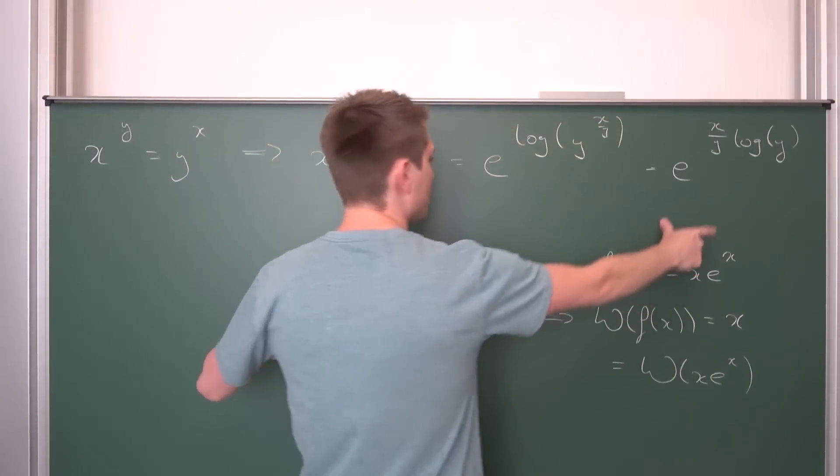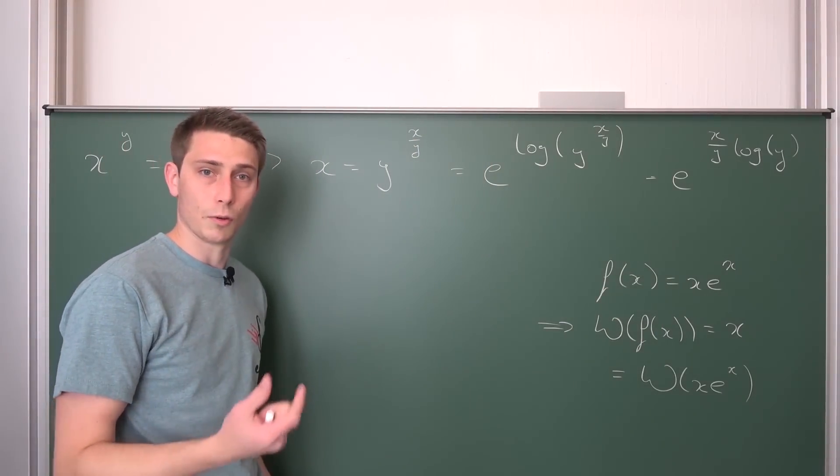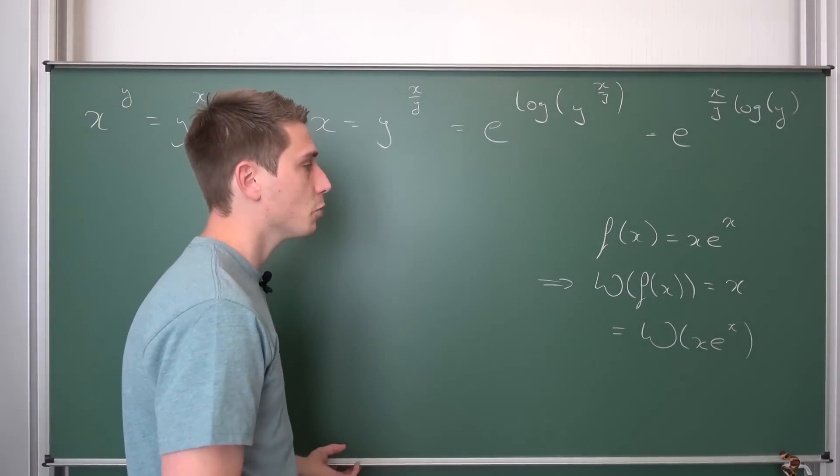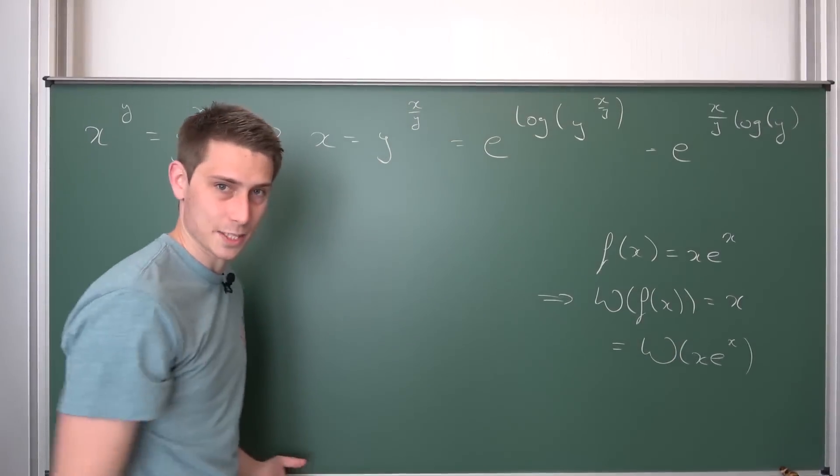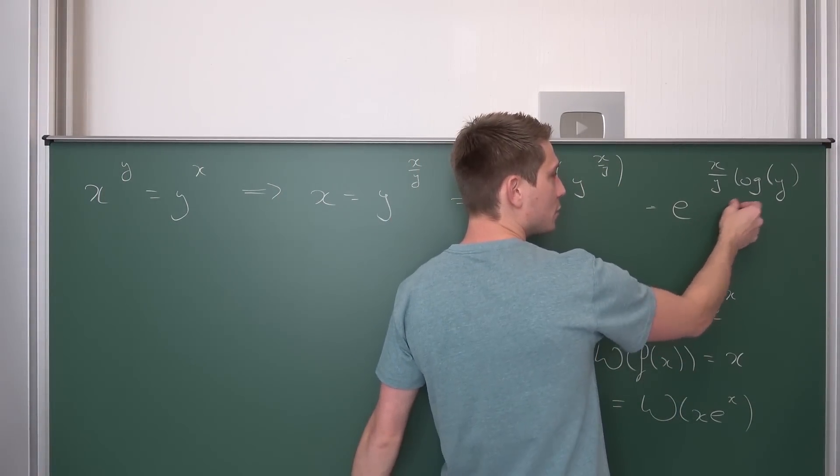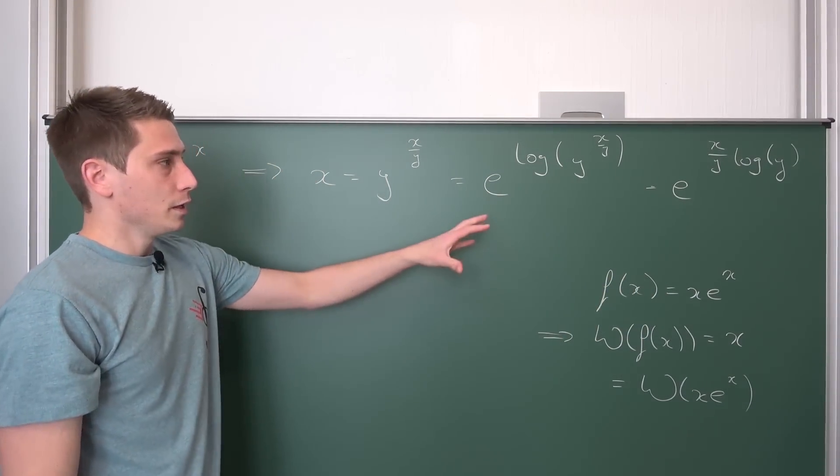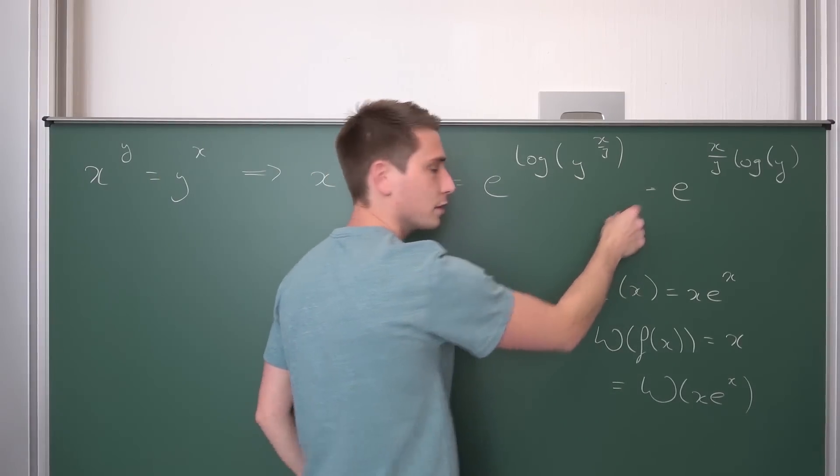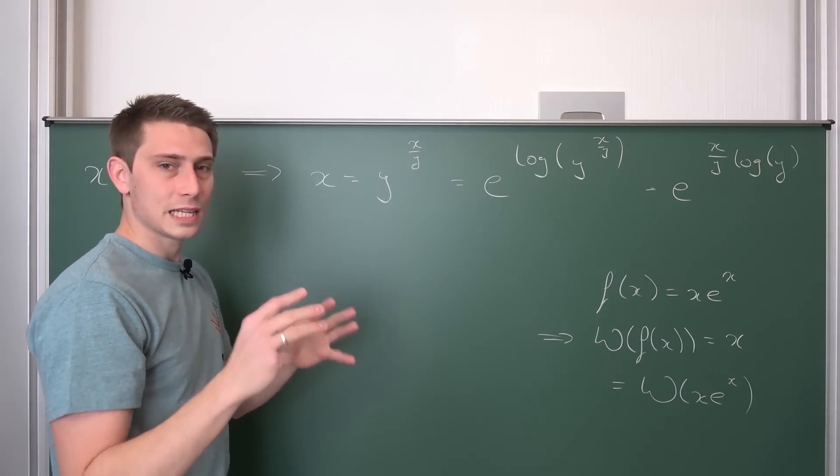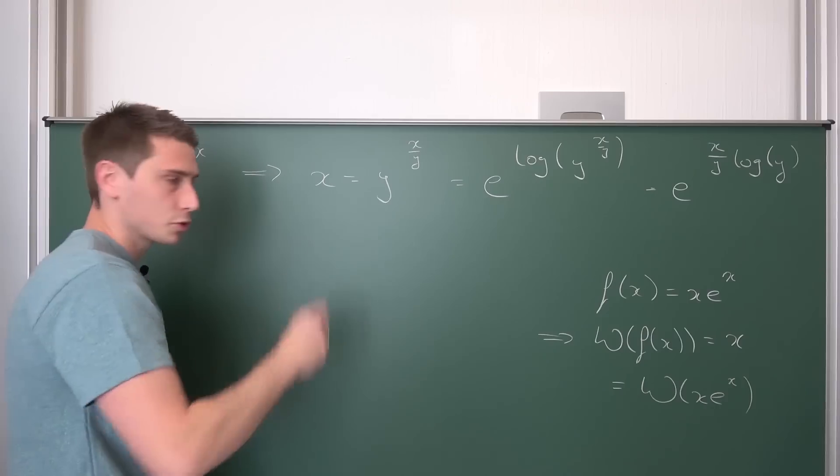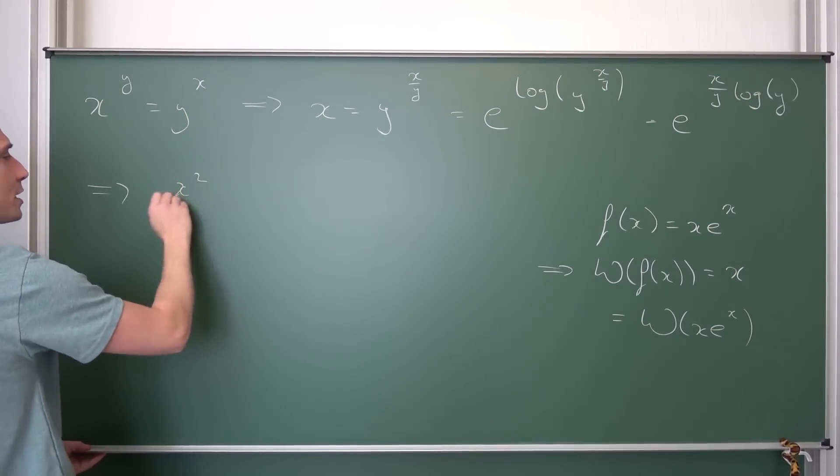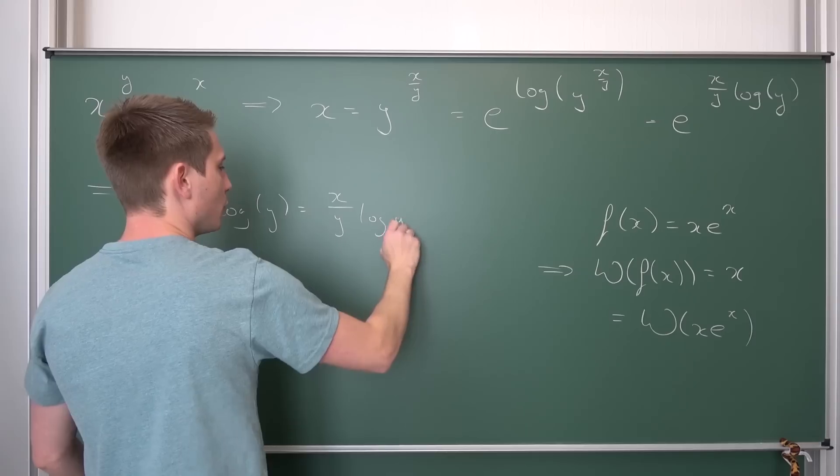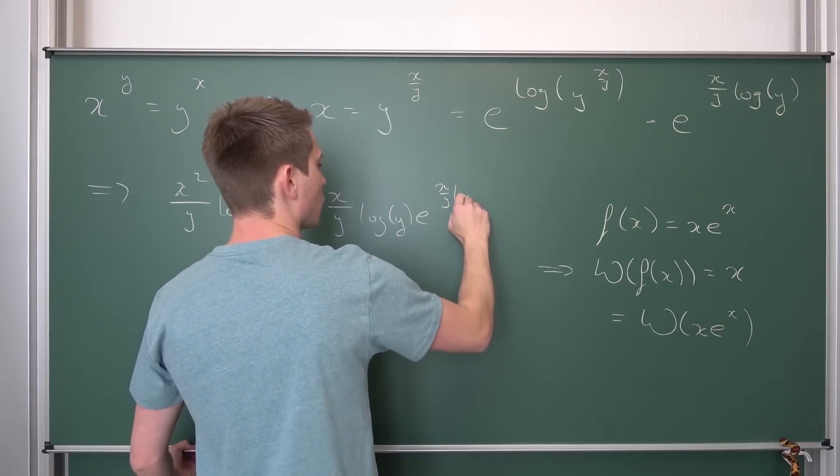We are going to do the same thing here. We would like to apply the Lambert W function on both sides such that we can extract either x or y from this equation that we have here. But we need to do some more manipulations at the moment simply because our x in front of the e to the x is missing at the moment. e to the x in our case right now is e to the x over y times the logarithm of y. Now, if we just were to multiply this exponent on both sides, it shouldn't be equal to 0, otherwise we would run into problems.